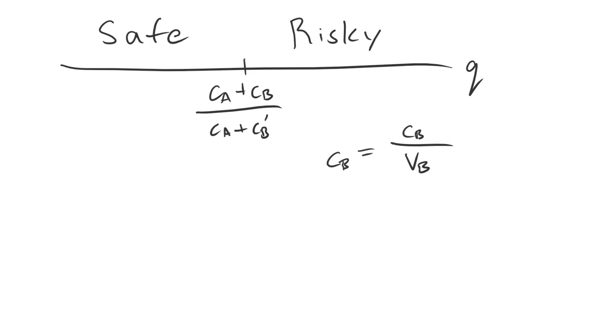Imagine I wanted to take a comparative static on this game. We've done this once before with A's cost for war. That makes sense because there's only one type of A. Here there are two types of B, a high cost type and a low cost type. We might not know whether B has high or low costs because we don't know how B values the object at stake. We don't know if they care a lot about it or don't care very much about it at all.